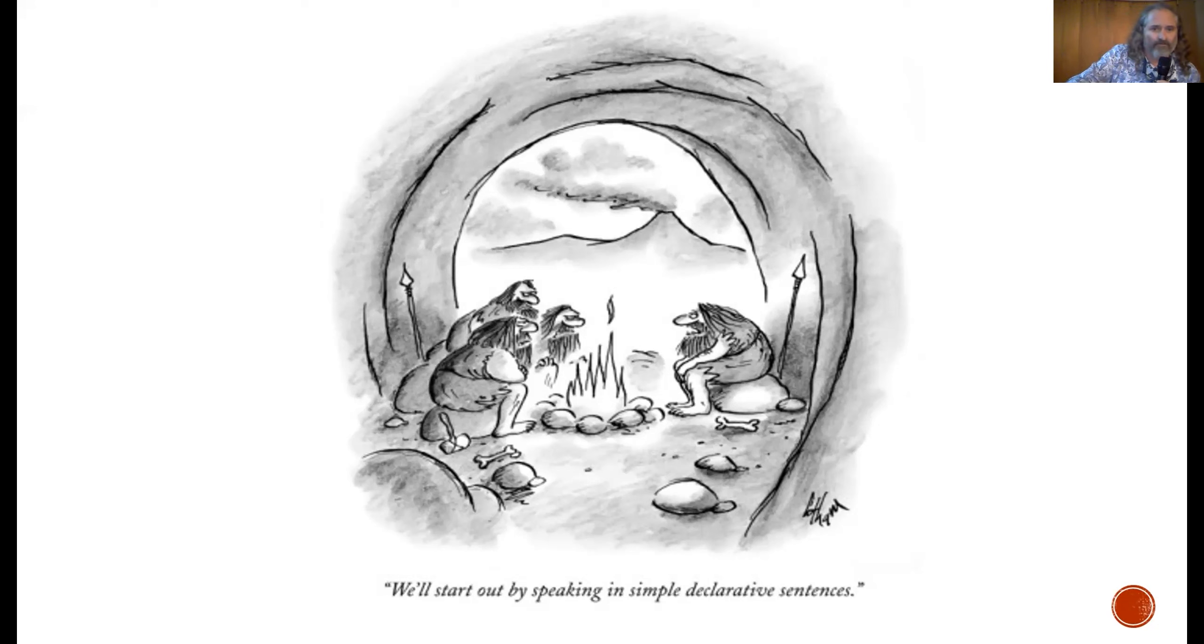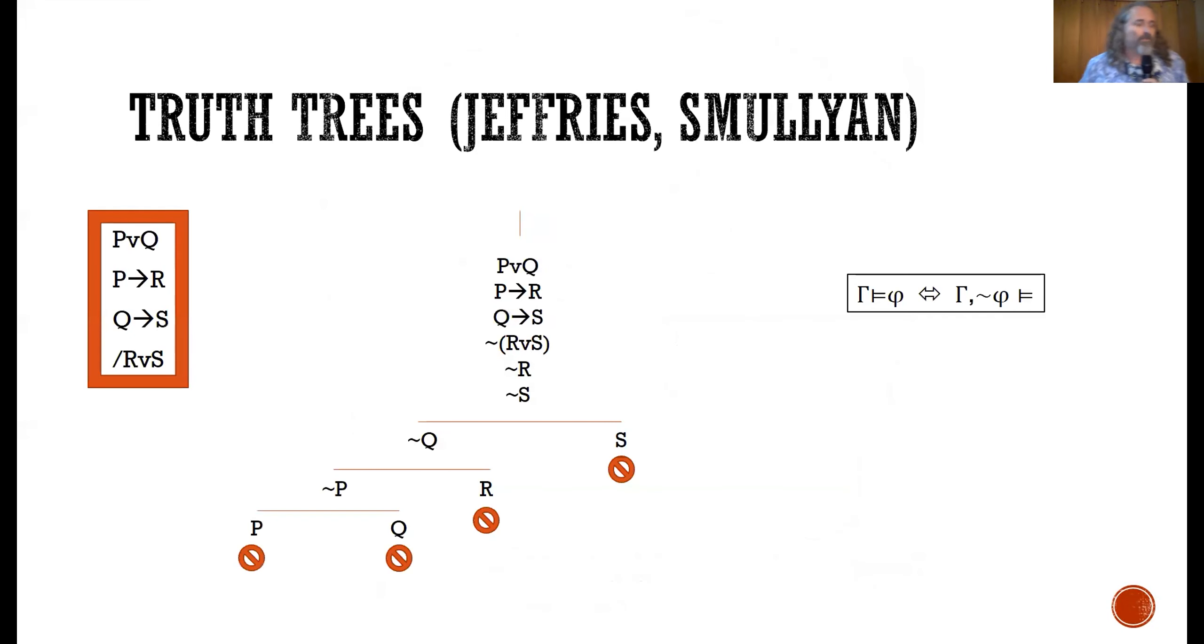By way of motivating this talk, I want us to consider a couple of demonstrations in a few alternate logical systems of a sequent here. The sequent is a constructive dilemma, so it's just P-Wedge Q, P arrow R, Q arrow S, therefore R-Wedge S. This is a demonstration of the validity of that sequent using what's called a truth tree, first popularized by Richard Jeffries, who claims he borrowed it from Raymond Smullyan. You've probably seen these in introductory logic texts, maybe you've taught them yourself.